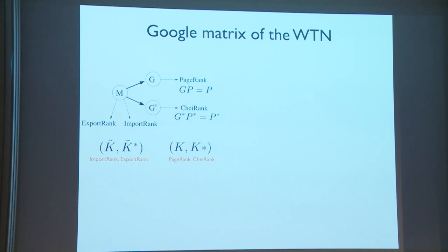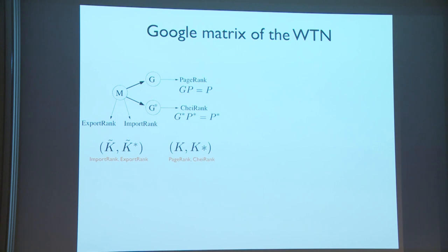With this money matrix we build G, the Google matrix, and we can also build G* which uses the transpose of the money matrix, effectively inverting time. The outgoing links carry real information — unlike the World Wide Web, you cannot improve your position by adding fake outgoing links. The main idea is also to compare PageRank and CheiRank to simple volume rankings like export rank and import rank, which measure a country's importance by total import or export volume. Having these two definitions allows us to use a two-dimensional ranking.